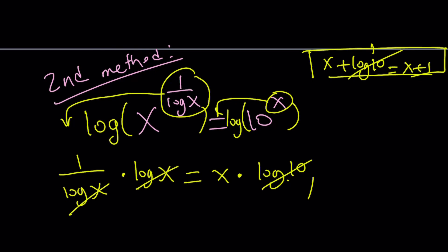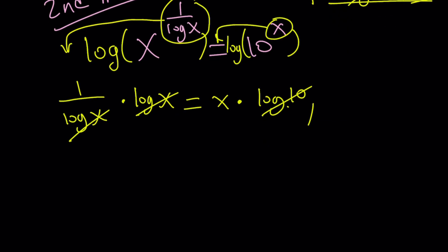Log x cancels out as long as log x does not equal 0. And from here we get x equals 1. But that implies log x is equal to 0. So we couldn't cancel out in the first place. Well, even if you do, this solution is not going to count. We only got one solution and that didn't work. No good. But that's what happens sometimes.